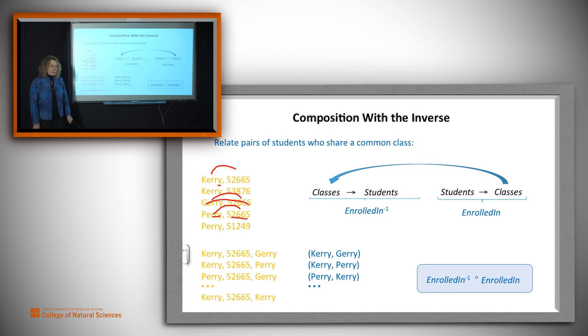Note one interesting thing. Cary relates to 52665, which in turn relates back to Cary. So we can get elements like this, Cary to 52665 back to him or herself, and we get Cary relating to Cary. This makes sense, right? Everybody is in a class with themselves.